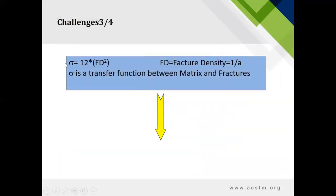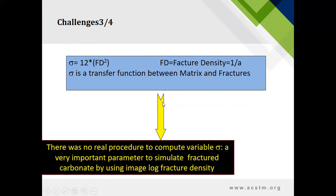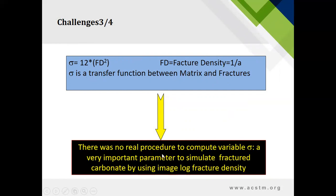The third challenge we had, as you know, sigma is the transfer function between matrix and fractures, and FD, which is fracture density, equals 1 over a. But there was no real procedure to compute variable sigma, which is a very important parameter to simulate fractured carbonate by using image log fracture density.